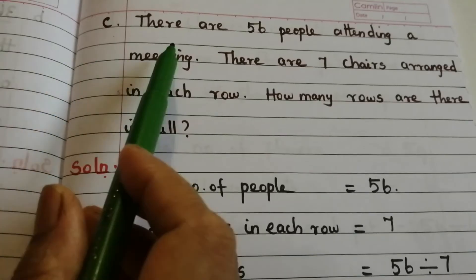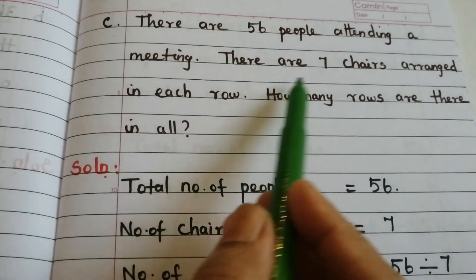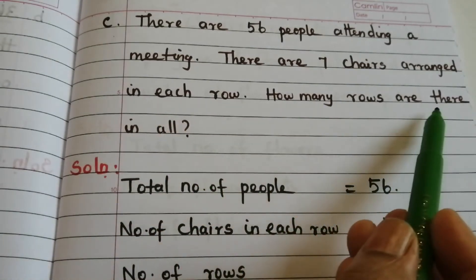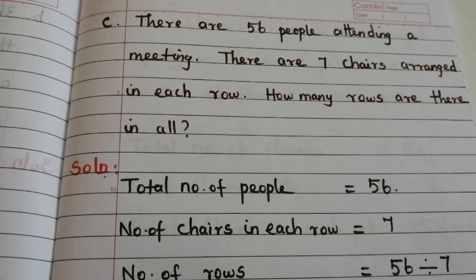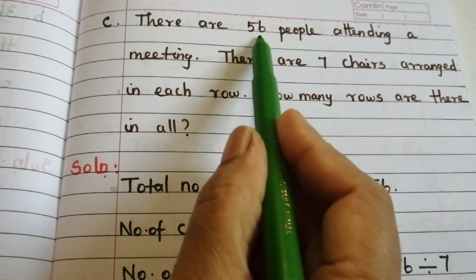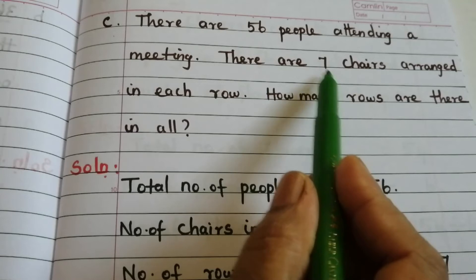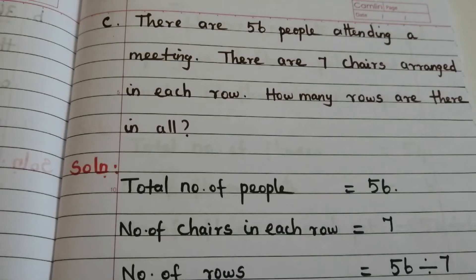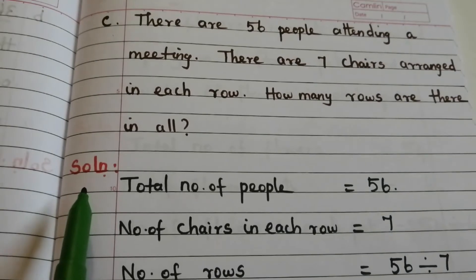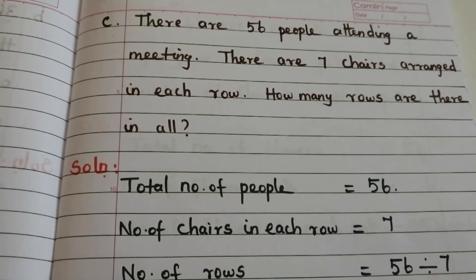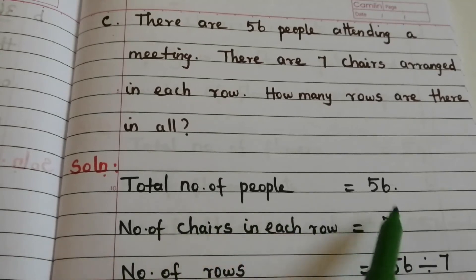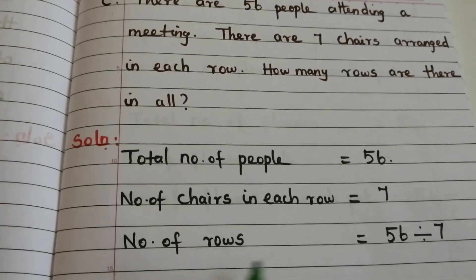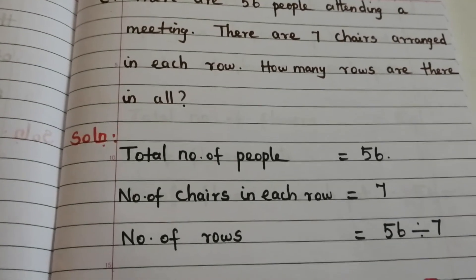Problem C: There are 56 people attending a meeting. There are 7 chairs arranged in each row. How many rows are there in all? Here the dividend is 56 and the divisor is 7, so 56 ÷ 7 gives the answer. Statements: total number of people = 56, number of chairs in each row = 7, number of rows = 56 ÷ 7.